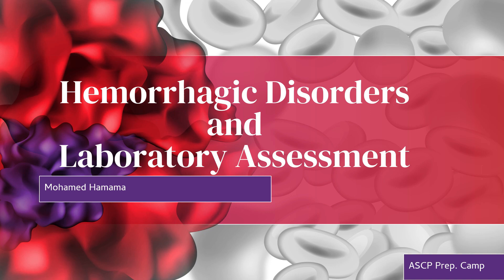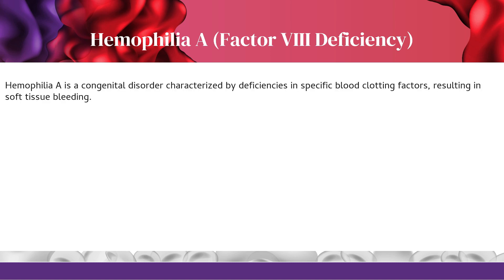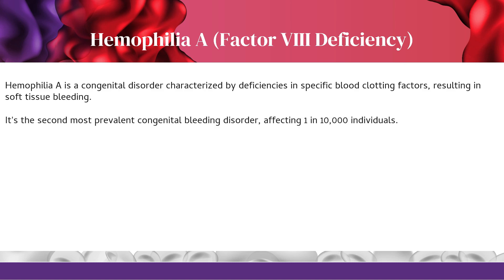Let's explore the realm of hemophilia A, B, and C. Hemophilia A — Factor 8 Deficiency. Hemophilia A is a congenital disorder characterized by deficiencies in specific blood clotting factors, resulting in soft tissue bleeding. It's the second most prevalent congenital bleeding disorder, affecting 1 in 10,000 individuals.